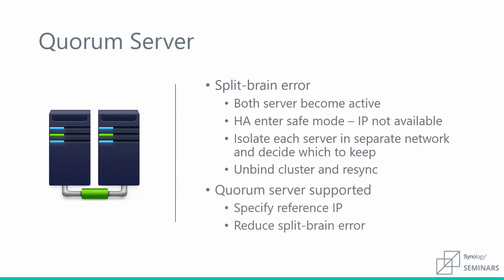One thing you can do to prevent split-brain errors is implement a quorum server. A quorum server — which could be your DNS server — is an anchor that both the active and passive servers ping to figure out their roles. For example, if the network goes down and both servers are offline, they'll start pinging the quorum server. If there's no response, the passive server will realize the network has gone offline and that it does not need to take on the role of active server. Setting up a quorum server is a great way to protect against split-brain errors.